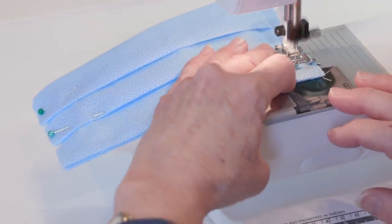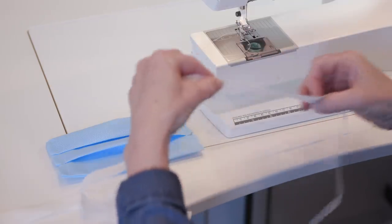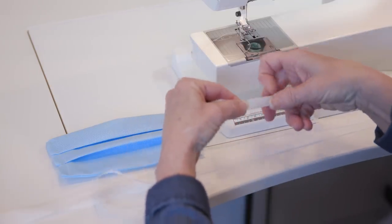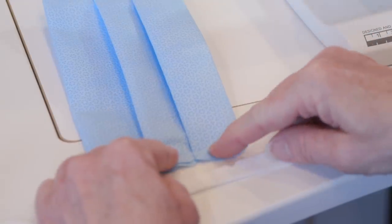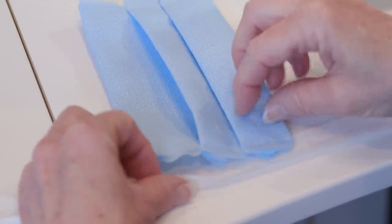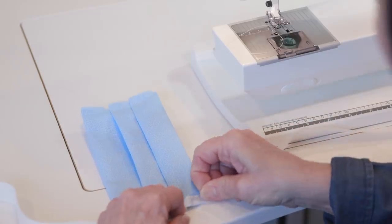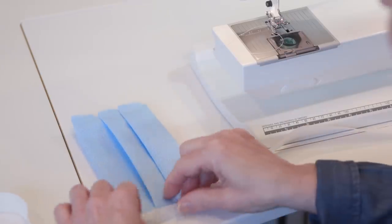Next we will make fabric ties. Fold the tie lengthwise. The tie will serve as a binding along the sides of the mask. Notice the small center notch in each tie. The notch should be placed about one inch below the top of the mask.